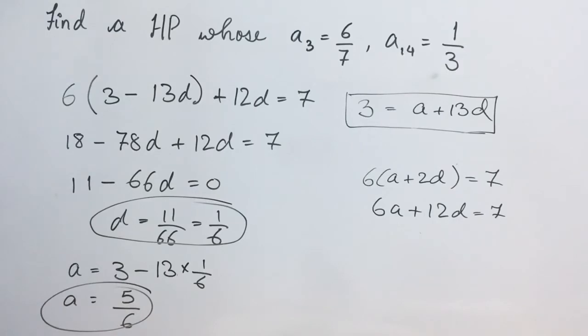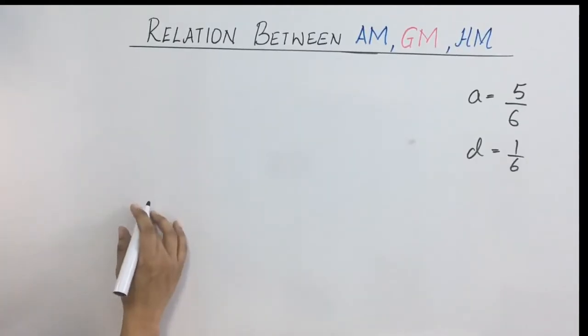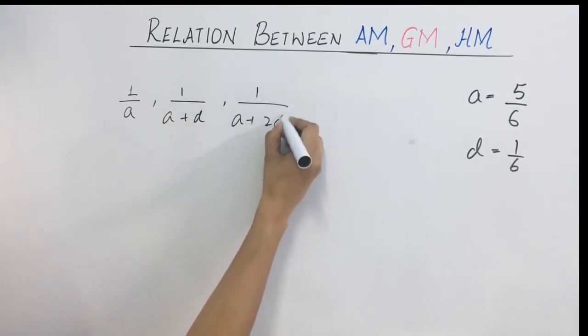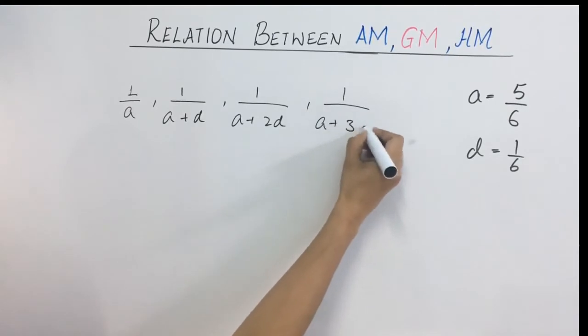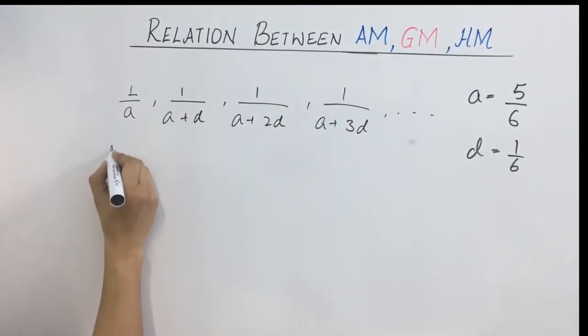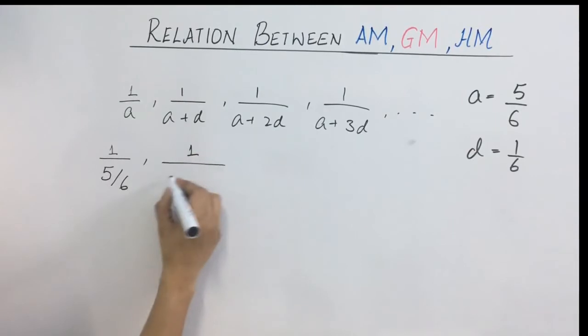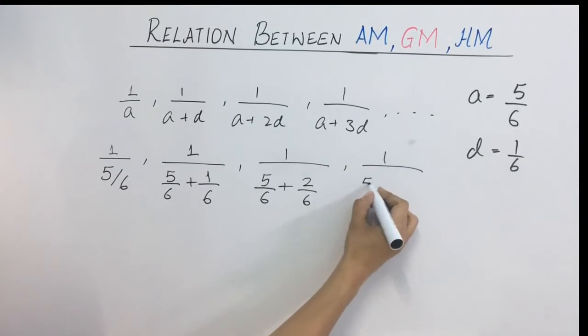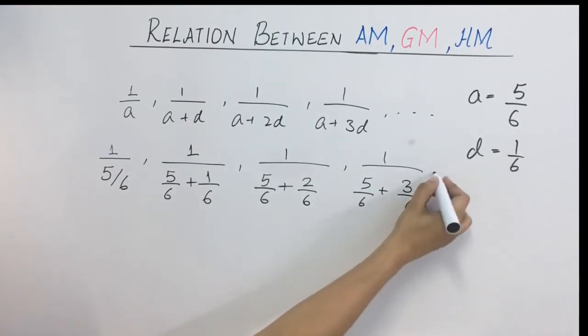From this we will get the terms of HP. So what our HP is going to be? It will be 1 upon A, 1 upon A plus D, 1 upon A plus 2D, 1 upon A plus 3D and so on. These will be the terms of our HP. So first term will be 1 upon A, what is A? A is 5 upon 6. Next term, A is 5 by 6 plus D. What is D? D is 1 upon 6. Next term, 1 upon A plus 2 times of 1 upon 6. Next term, 5 by 6 plus 3 times of 1 by 6 and so on.